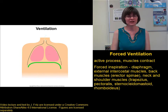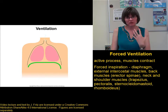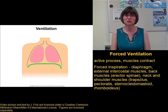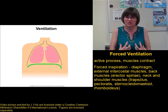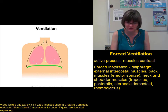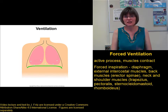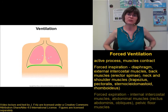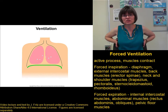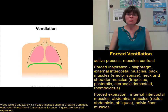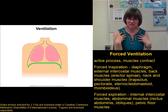When we want to breathe out more than a normal exhalation, that is also an active process requiring energy, as muscles contract. During forced expiration, the internal intercostal muscles contract — where external intercostals lift ribs up and out, internal intercostals pull them in and down — decreasing thoracic volume. Muscles in the shoulders also contract, pulling the shoulders down and in, further decreasing thoracic volume.